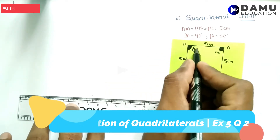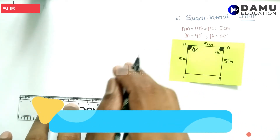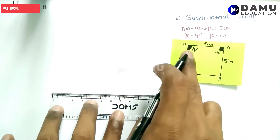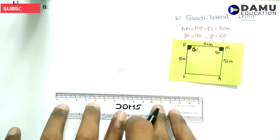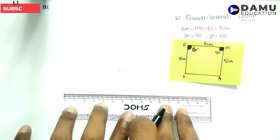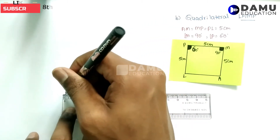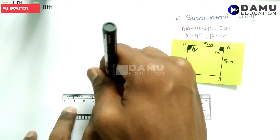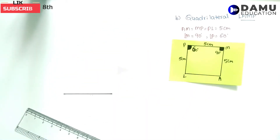First we need to take PM as the base. So let us take PM as base. We are drawing PM here — 5 centimetres from 0. This is the line PM.